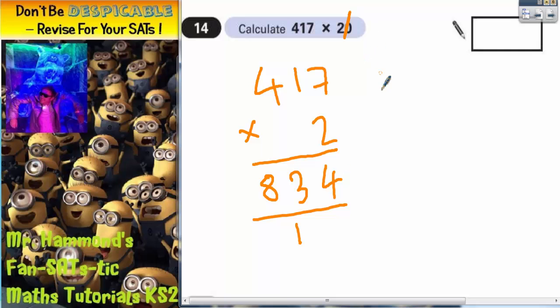But don't forget that we wanted to times by 20. So what we can say is this: If 2 lots of 417 is 834, then 20 is 10 times bigger than 2. So the answer is going to be 10 times bigger than 834. And 10 times bigger than 834 just means we need to put the 0 back on the end. So the answer is going to be 8,340.